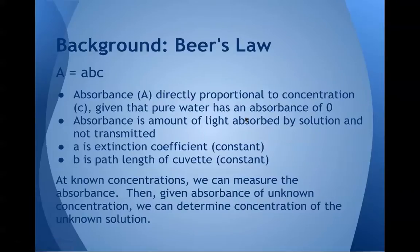Some background about Beer's Law: Beer's Law states that absorbance, given by A, is equal to A times B times C, where C is the concentration. Given that pure water has an absorbance of 0, absorbance is the amount of light absorbed by a solution and not transmitted through the solution. A and B are two constants — A is the extinction coefficient and B is the path length of the cuvette.